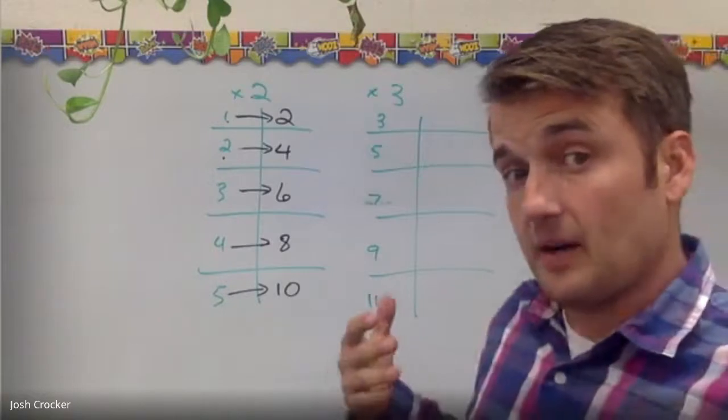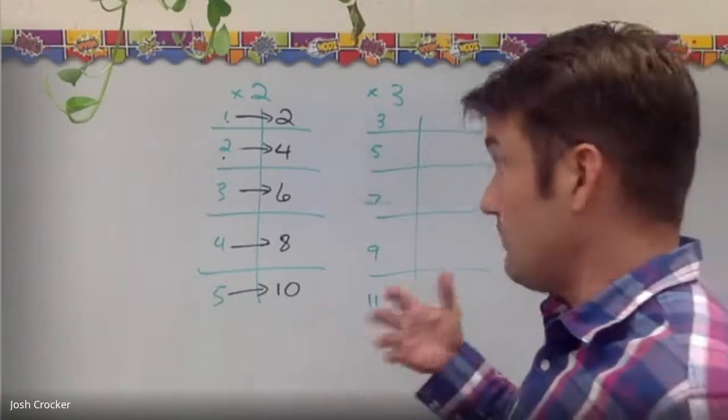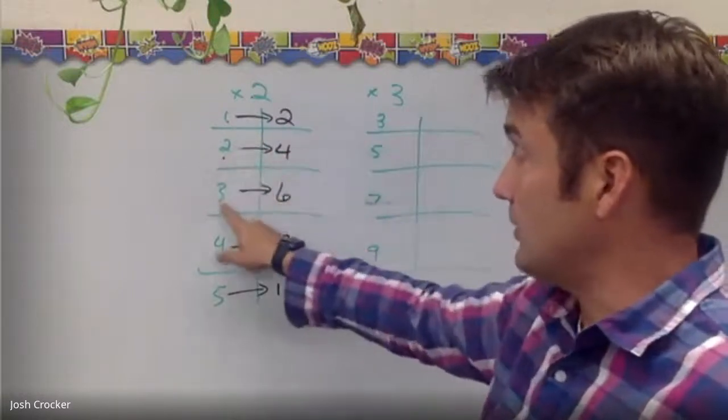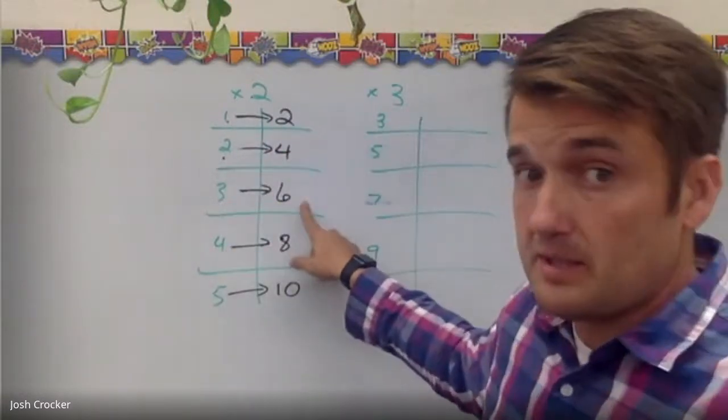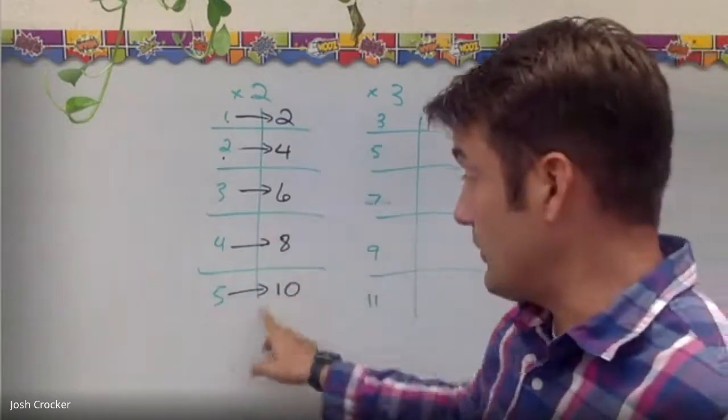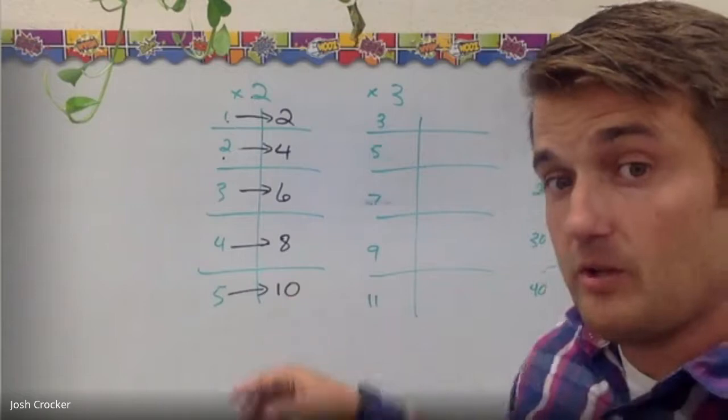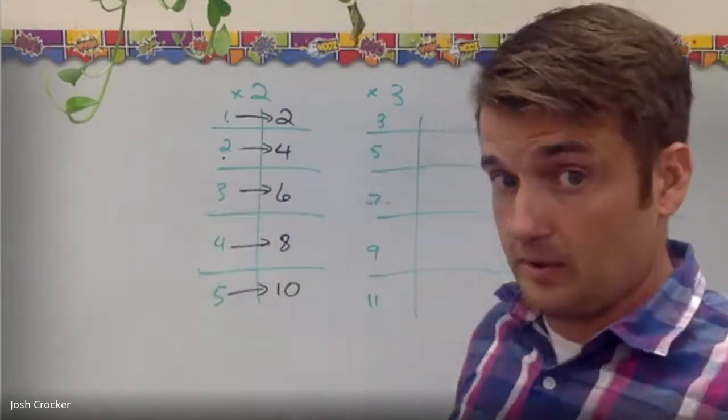Whereas if I were adding if my rule was plus 2 it would be 1 to 3, 2 to 4, 3 to 5 the jump would always be 2. 5 would only go to 7 it wouldn't go all the way to 10. So when you see bigger jumps between the numbers that's a multiplication.